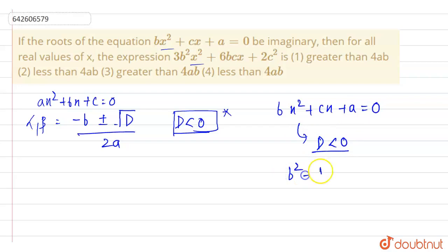So comparing this equation to this and evaluating, we got b square is c square, 4a is b and c is a. So from here we can write c square is less than 4ab.